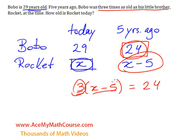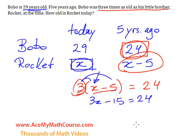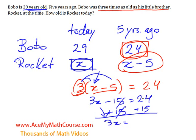Once we solve for X, we will know Rocket's age today. So let's distribute the three: three times X is 3X, three times negative five is negative 15, and that equals 24. We want to isolate X, so I'll add 15 to both sides of the equation. The 15s cancel out, we bring down the 3X, and that equals 24 plus 15, which is 39. Now we divide both sides by three, and X equals 39 divided by three, which is 13.